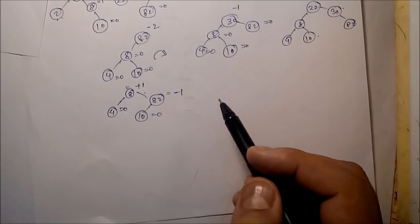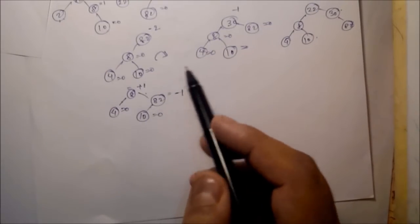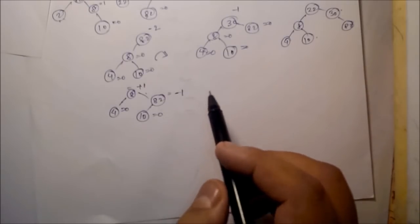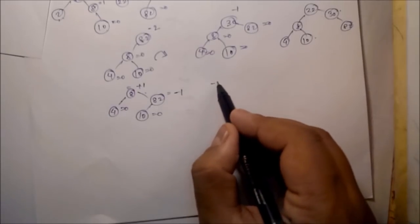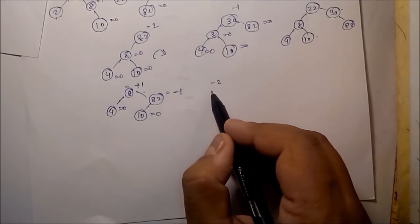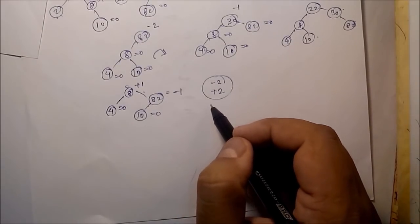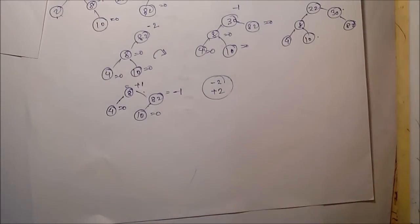In an AVL tree, after deletion we have to recheck the height difference for each and every node. If any particular node is a critical node — that means the height difference is less than minus 1 or more than plus 1 — then we have to rotate the tree to balance the height.